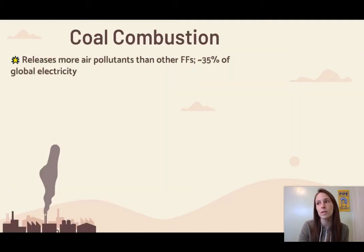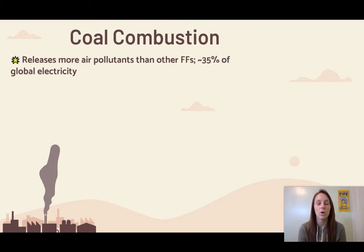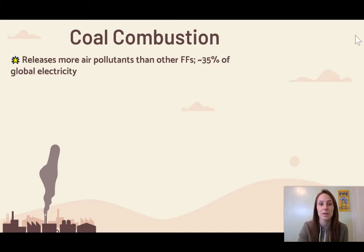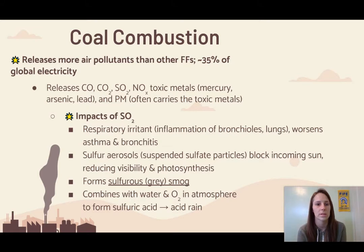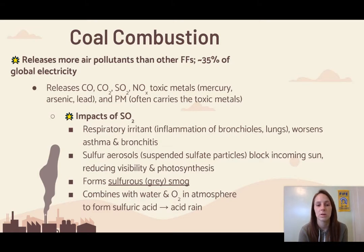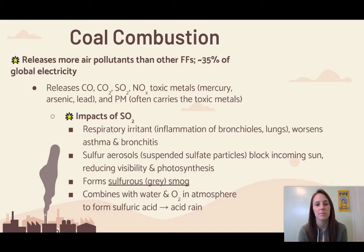Now we're going to look at coal combustion, which we learned about in unit six. Coal combustion is a problem because it releases more air pollutants than any of our other fossil fuels, and it makes up about 35% of our global electricity. Coal combustion releases carbon monoxide, carbon dioxide (a greenhouse gas, not an air pollutant), sulfur dioxide, NOx (nitrous oxide and nitrogen dioxide), toxic metals like mercury, arsenic, and lead, and particulate matter, which often contains toxic metals.